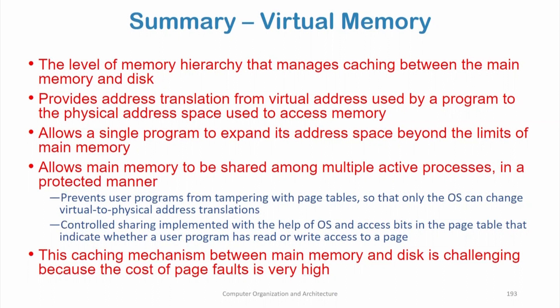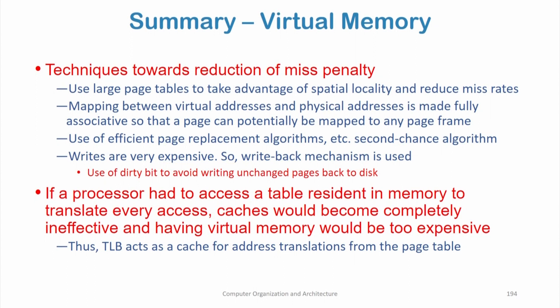We can share a page between multiple programs through access bits with the help of the OS. This caching mechanism between main memory and disk is challenging because the cost of page faults is very high. If you have a miss in the main memory you have to go to disk, which can be thousands of times slower than accessing main memory. So we need techniques to reduce the miss penalty and avoid going to disk.